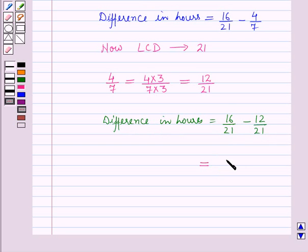This will be equal to 16 minus 12 upon 21, which is equal to 4 upon 21 hours.